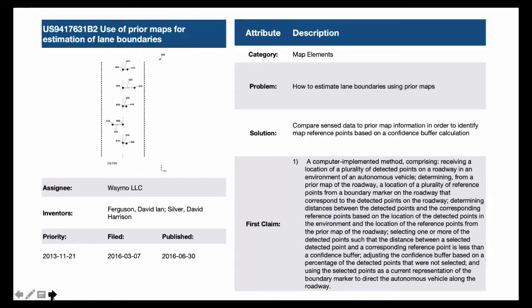So here's an issued patent in the nine millions: Use of Prior Maps for Estimation of Lane Boundaries. And we turn it into a problem statement—how to estimate lane boundaries using prior maps—and the solution statement: compare sensor data to prior map information in order to identify map reference points based on a confidence buffer calculation.